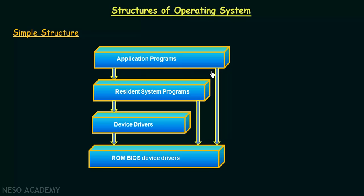Because there is another structure of operating system called the layered structure, which we will be discussing later, and we will see how it is different from this one. Even though this looks like a layered structure, it is not, because all these layers have access to the base hardware. Such freedom leaves MS-DOS vulnerable to errant or malicious programs, causing the entire system to crash when a user program fails. If an application program is directly accessing the base hardware and that program fails, then the entire system is going to crash.